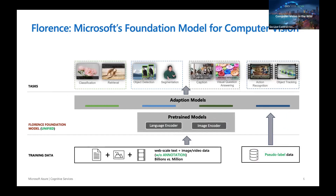As an example, Microsoft's Florence model is pretrained on massive image-text data using contrastive learning. The heart of the model is the image encoder and the language encoder, which are jointly trained to form a semantic layer that unifies diverse computer vision tasks through language. Equipped with the semantic layer and adaptation modules built on top of it, such as the object detection head, the Florence model has shown very impressive capacity for adapting to new tasks in zero-shot and few-shot learning settings.